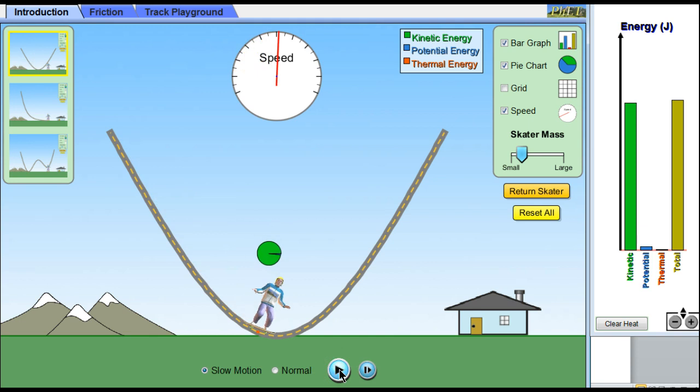As he reaches the bottom, it's almost all green. You should also notice that his speed is maximized at that point. He's turned his potential into kinetic. You can also see that over here in the bar chart. The potential is almost zero. The kinetic is almost max. Notice that the total is staying the same. We're not changing the energy. We are simply replacing it into different forms. The total is staying the same.